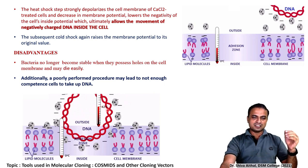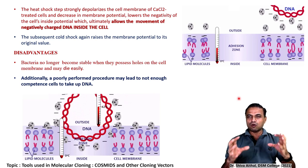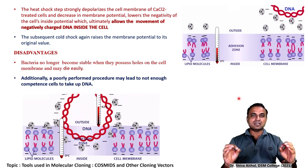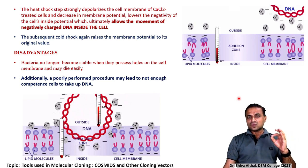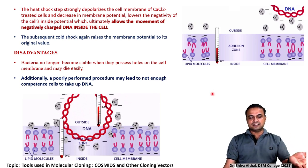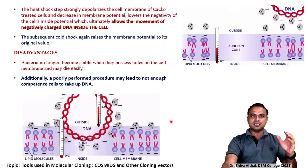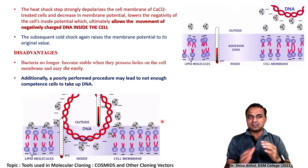The heat shock deeply and strongly depolarizes the cell membrane of the calcium chloride-treated cells. There is depolarization and the membrane potential decreases. This lowers the negativity of the cell's inside potential. All calcium ions will attach to the negatively charged phospholipid layer, and this heat shock will depolarize the cell membrane. Then the membrane potential is decreased, which allows the movement of the negatively charged DNA inside the cell.